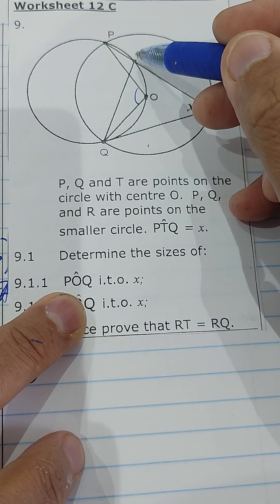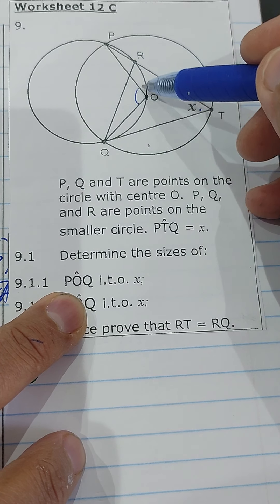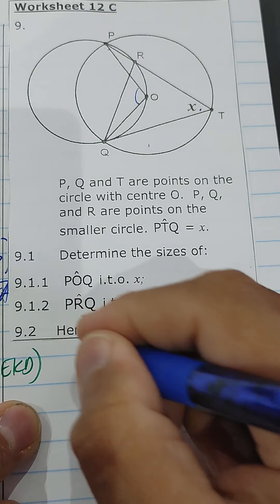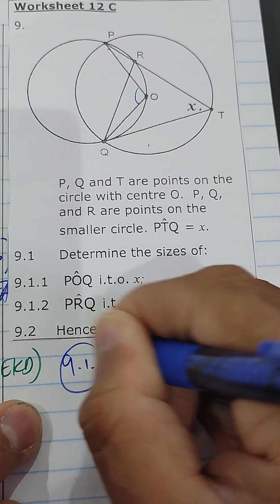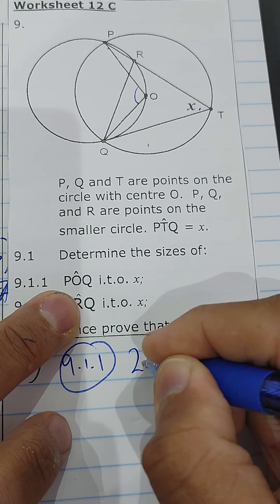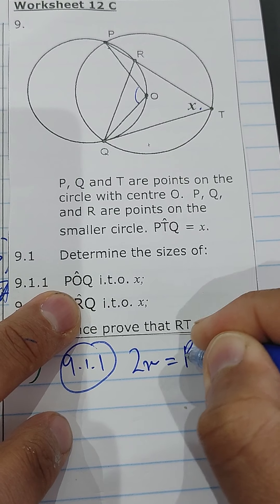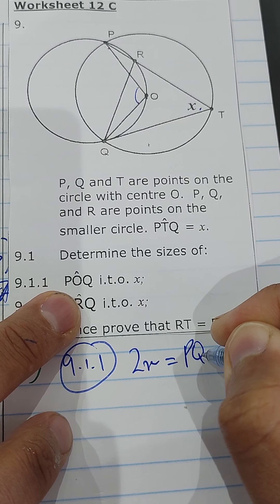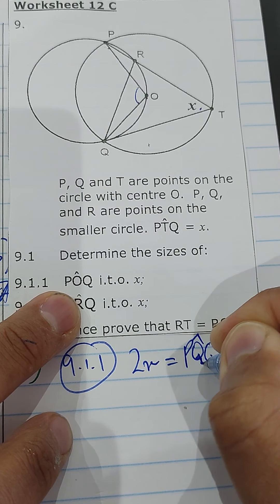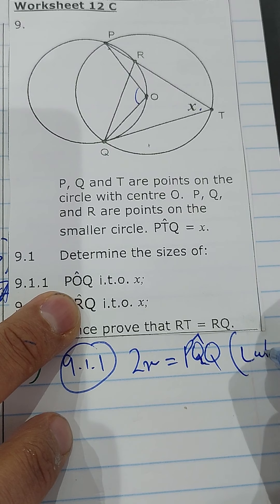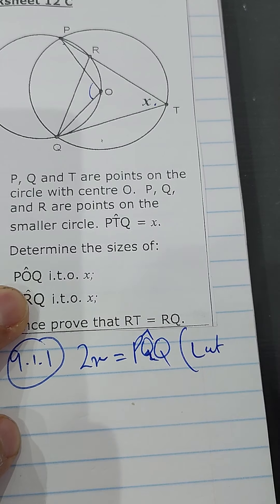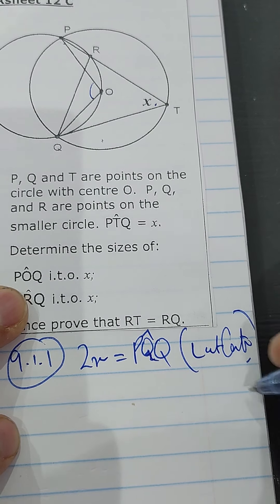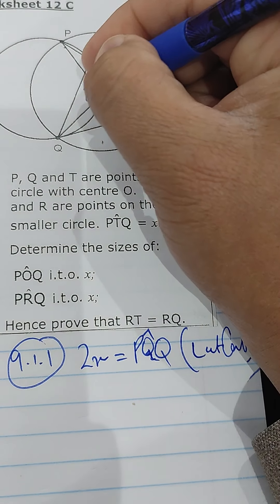They had to say O as well, because O is also on the smaller circle, so O is on both. Of the smaller circle, PTQ is x. The question says determine the size of POQ in terms of x. That one is easy. We said that it is 2x. POQ, and why is that? It's angle at center, the central angle theorem. Angle at center is twice angle at circumference, so there you go, 2x.